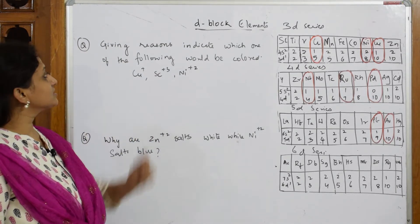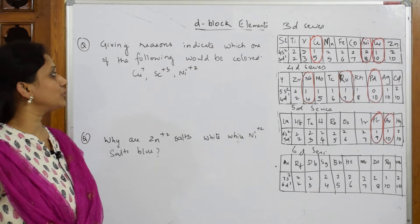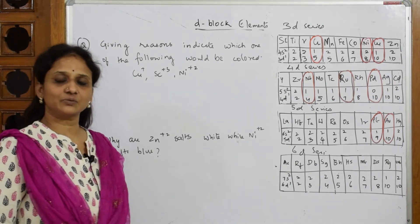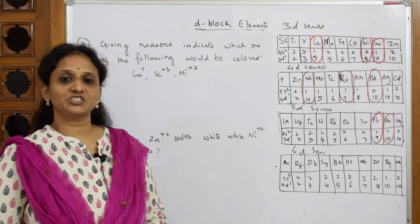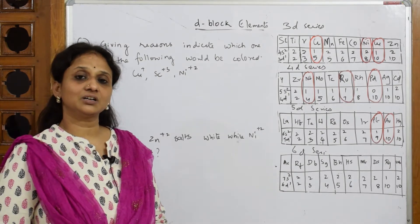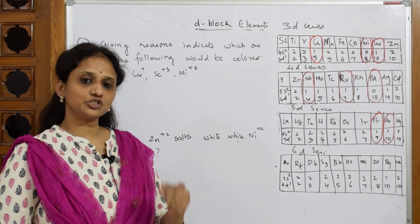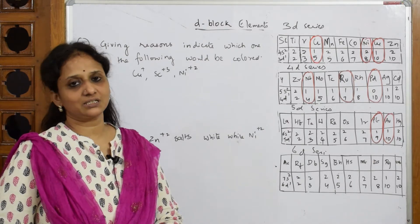The question says: give reasons indicating which one of the following would be colored. I have to tell whether the particular ion is colored or not. How do you say something is colored or not?